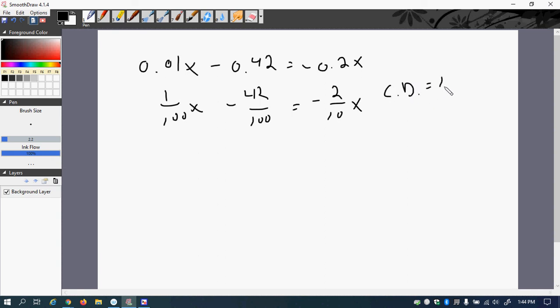So I'm going to multiply the whole thing by 100, which is over 1. So if I multiply 100 times 1 and divide it by 100, I get 1, that's why I just get x. If I take 100 times the negative 42, hundreds cancel, and so I get minus 42. And then if I do this one where I'm doing the 100 times the negative 2/10, well the 10 goes into the 100 ten times, and 10 times negative 2 is negative 20, so I get negative 20x.